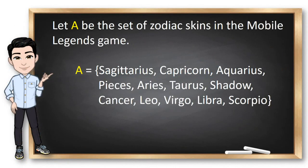A set is a collection of well-defined objects. These objects are called elements. Remember that a set should always be well-defined to identify the elements. It is common for sets to be denoted using uppercase letters, while the elements are enclosed using braces. For example, let A be the set of zodiac skins in the Mobile Legends game. For those who don't know, skins are like costumes and armor sets for a particular character. The zodiac skins are based on the 12 fire signs of constellation.